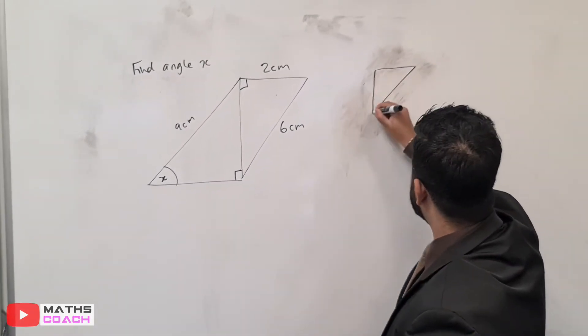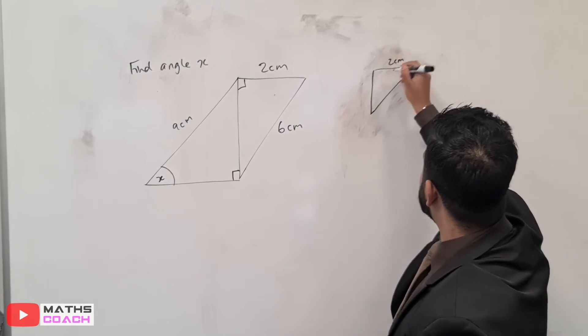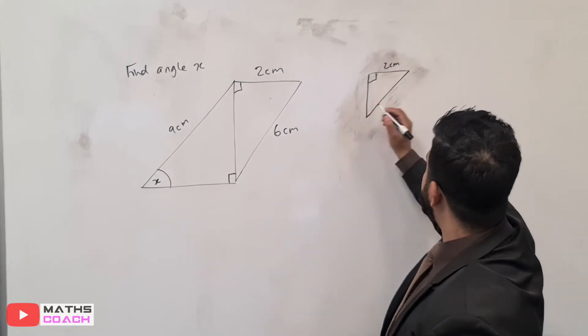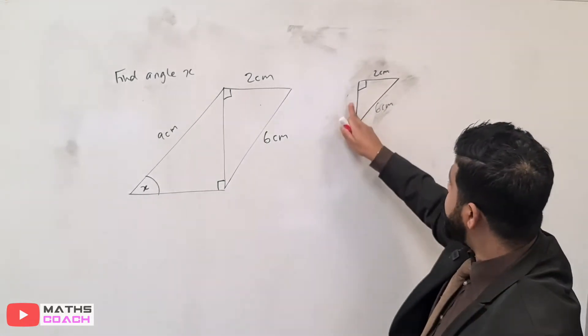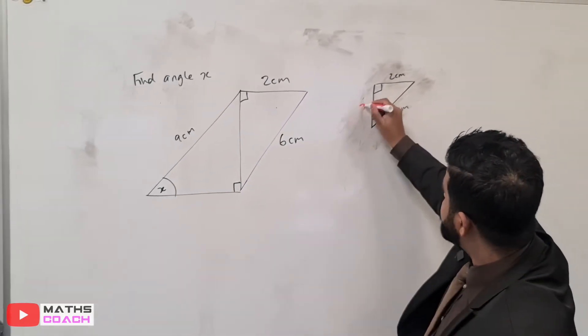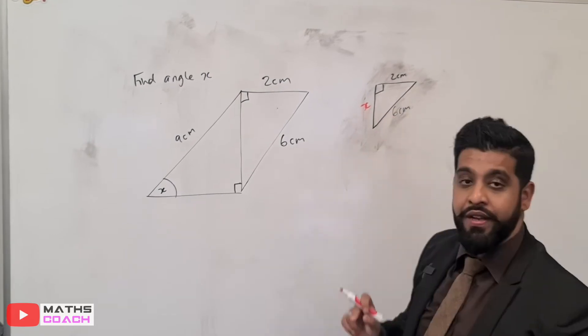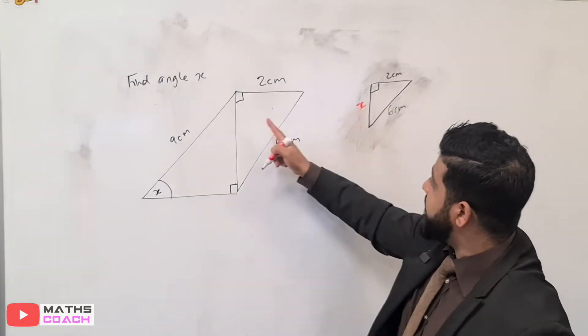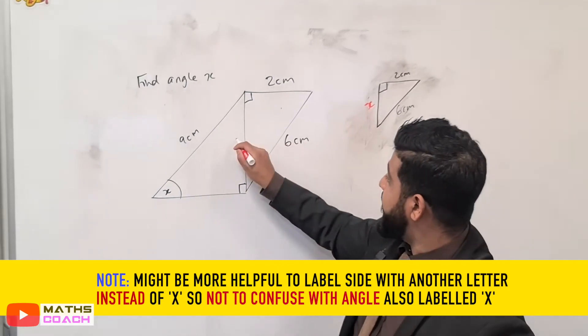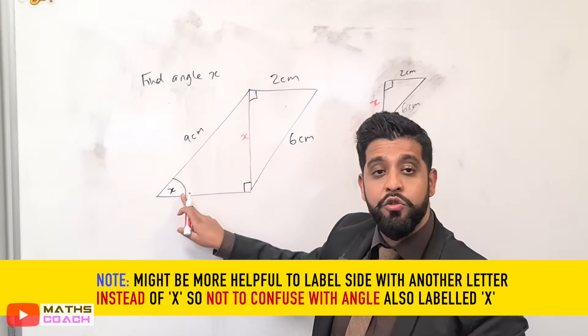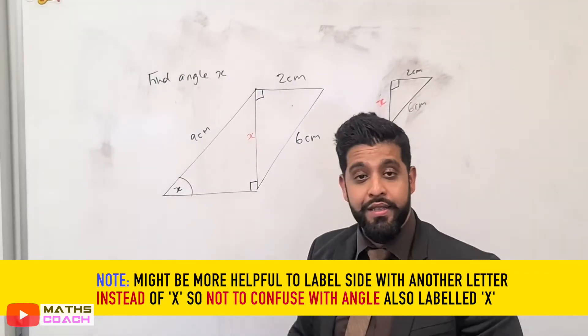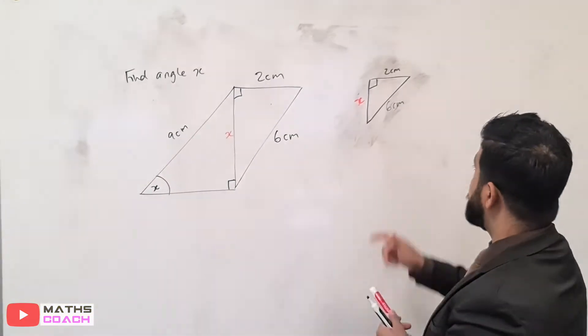We can label it as two centimetres here. That's the right angle, and this is six centimetres. Now, this side here, we're going to find this using Pythagoras. We've got two sides, and we can find the third side. And this side corresponds to this. So once we know this X value here, we'll have the two sides, and we can use Trigonometry to find this X value here.